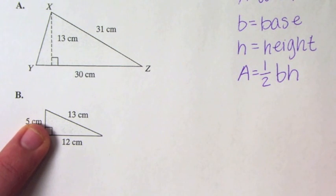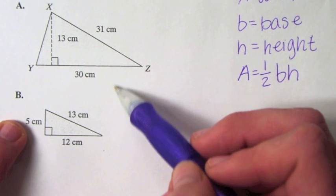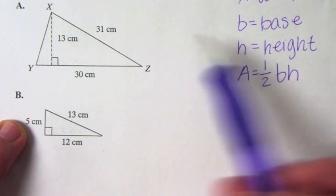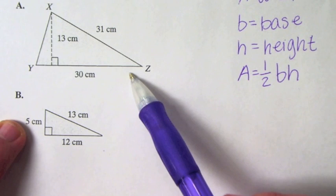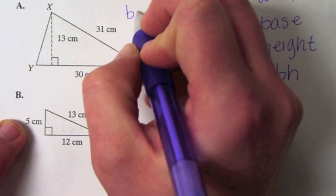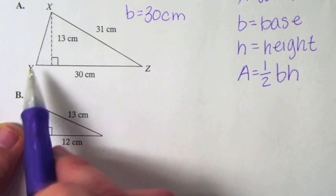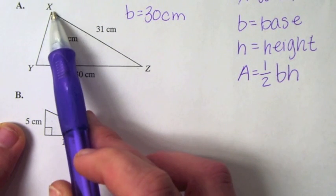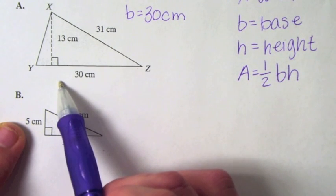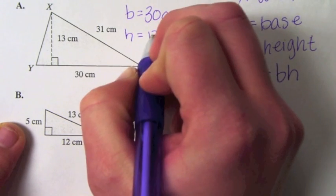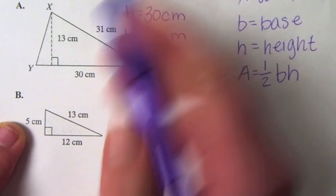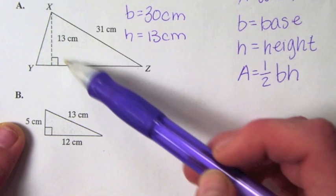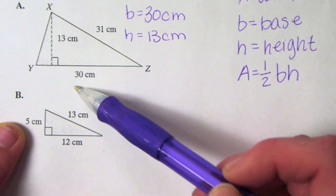We're going to put that into action. All we have to do on these two examples is identify our base and our height, then plug it into the formula and solve. On this triangle, the base is going to be 30 centimeters — this is our base right here. It's not always the bottom; it is always the side that your height goes to. Our height is going to be 13 centimeters. Height is always measured as an altitude in a triangle — it always goes from a vertex perpendicular to the opposite side, and that opposite side is the one you use as the base.